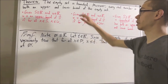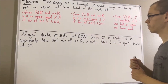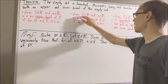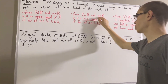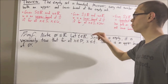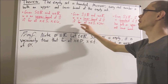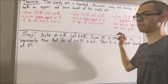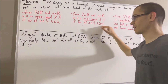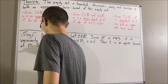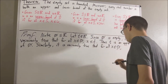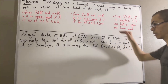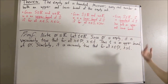Now we want to show that t is a lower bound of the empty set. What does it mean for t to be a lower bound of the empty set? Well, according to this definition, if we take s to be the empty set and w to be t, then we have that t is a lower bound of the empty set if, for every element x in the empty set, x is greater than or equal to t. Well, again, this is vacuously true. And since this is precisely what it means for t to be a lower bound of the empty set, we have that t is a lower bound of the empty set.